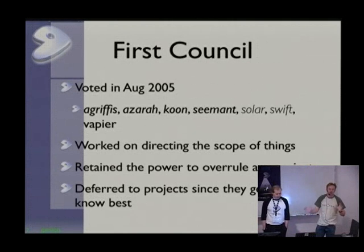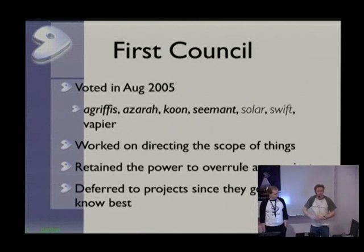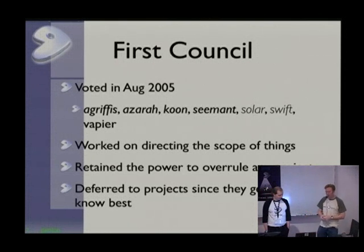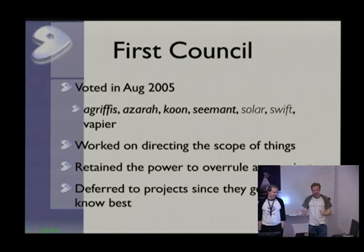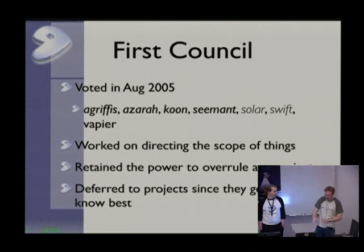I want to give a little background about how these councils have evolved. From 2005, we had a couple of councils. Looking at the names — those in italics actually left the project, and those in light italics either rejoined or we don't know if they're really active. This basically leads to the conclusion that there's only one guy from the first council still in Gen2, and even he is in and out — that's Vapier, Mike Freisinger, the one who wrote the blueprints for this presentation.